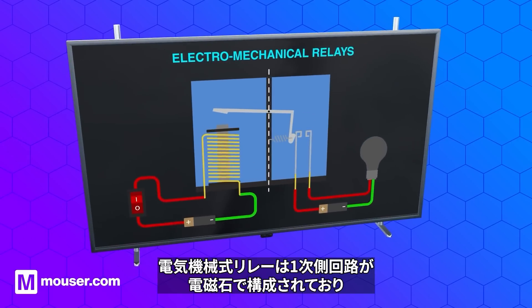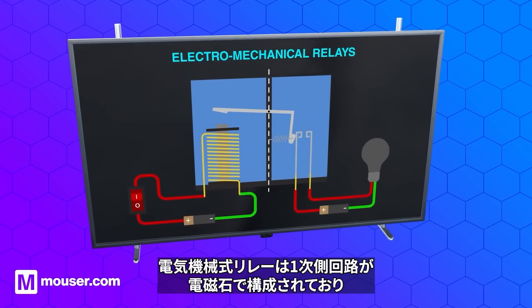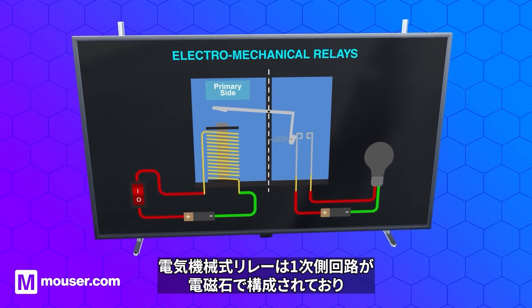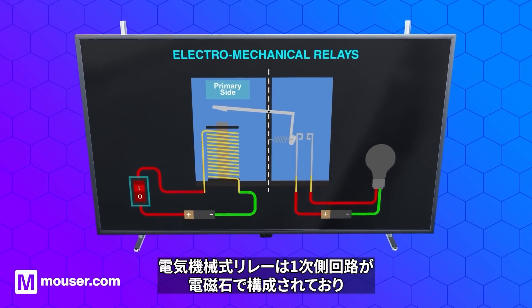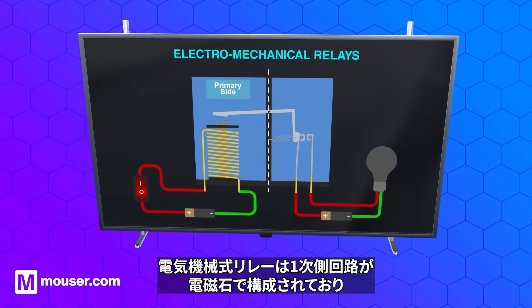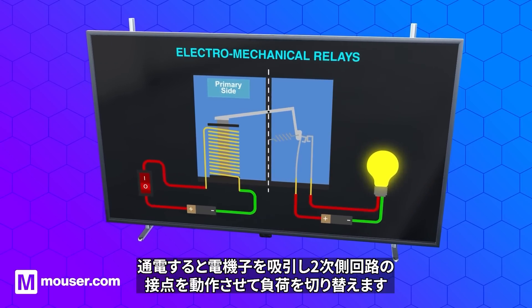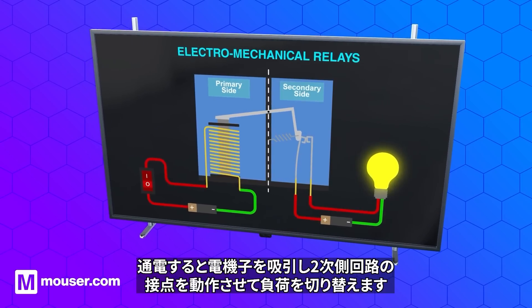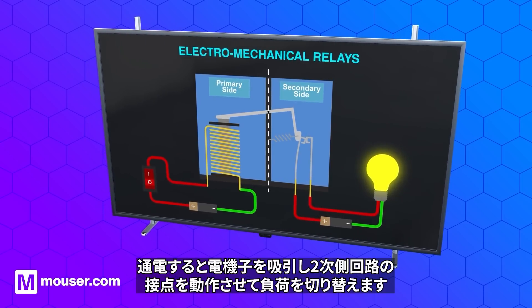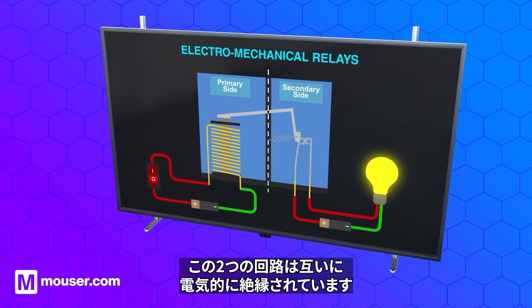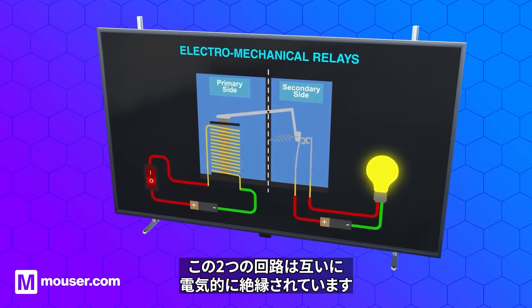In electromechanical relays, the primary circuit consists of an electromagnet that, when energized, attracts the armature, operating the secondary circuit contacts and switching the load. The two circuits remain electrically isolated from each other.